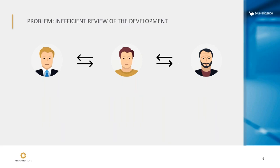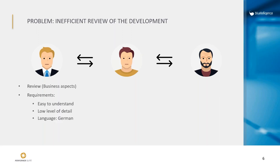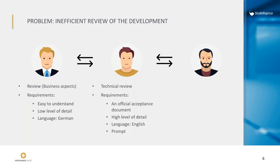Now we have the situation that Stefan and Martin somehow want to accept the implementation of James in an official way. So they need some kind of documentation to see if the work of James was correct and if everything got implemented as wanted. From Martin's side, he needs the document to review the development from a business perspective — an easy to understand documentation of the query with a low level of detail, and the language should be German. Stefan on the other side needs a technical review of the implementation, quite detailed, in English for official purposes, and he will use this documentation as an official document for the acceptance of the development.